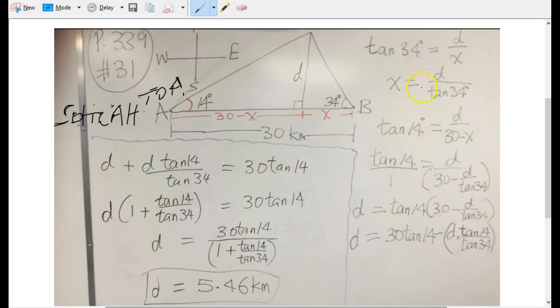Then we do the other triangle. Tan 14 is opposite over adjacent again because this side is hypotenuse. So if we write that, tan 14 is d over adjacent 30 minus x.